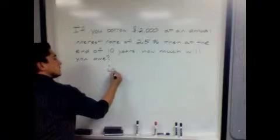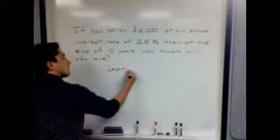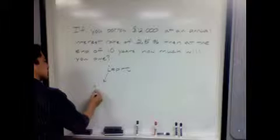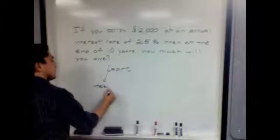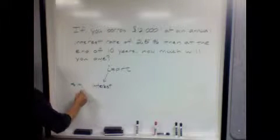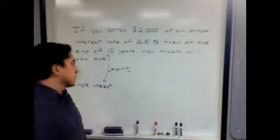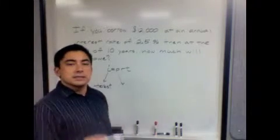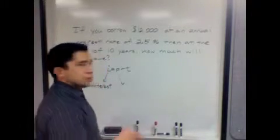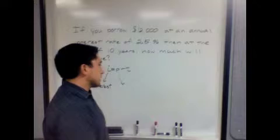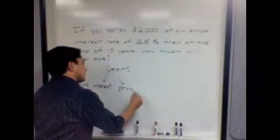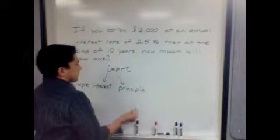We have a nice little formula for interest and it is I = PRT. So I, that is the interest, or on some of your problems it might say simple interest, same thing. The P stands for principal, this is the original amount that you borrowed or on some problems that you started a savings account, so this is your initial amount, your principal.